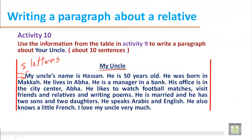This is the full paragraph about your uncle depending on the information in Activity 9. My uncle's name is Hassan. He is 50 years old. He was born in Makkah. He lives in Abha. He is a manager in a bank. His office is in the city center. He likes to watch football matches, visiting friends and relatives, and he also writes poems in his free time. He is married and he has two sons and two daughters. He speaks Arabic and English and also knows a little French.